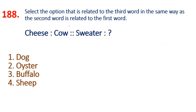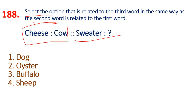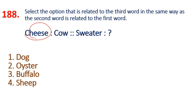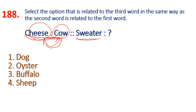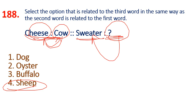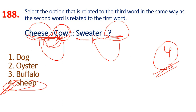188th question: whichever relation these two have, the same relation applies. Simple question — cheese is made from cow's milk. Sweater is made from wool; wool comes from sheep. So sheep gives wool, and wool makes a sweater. Cow gives milk, and milk makes cheese. Option 4 is the answer.